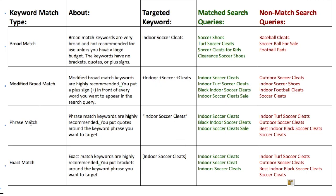Phrase match is a little more targeted — you're targeting exact phrases, so the phrase must appear intact in the search query with no words in the middle of it. The big difference from modified broad is that indoor turf soccer cleats would not match the phrase "indoor soccer cleats" because there's a word inserted. You can have words before or after the phrase — so black indoor soccer cleats or indoor soccer cleats for sale would match. But soccer cleats alone, best indoor black soccer cleats, or outdoor cleats would not match.